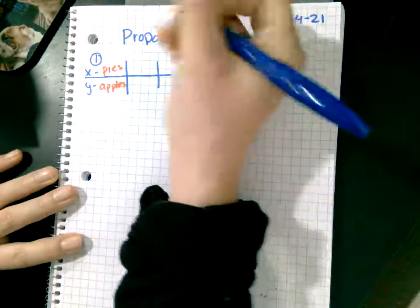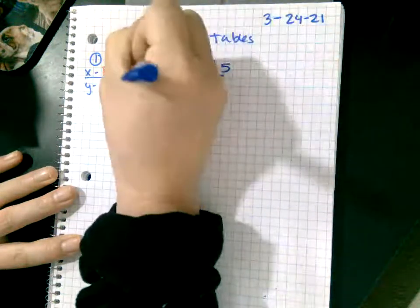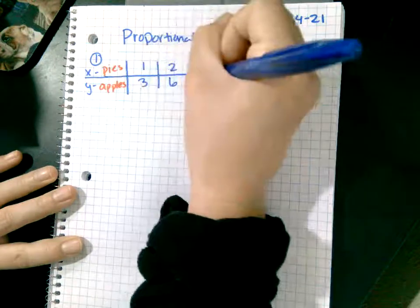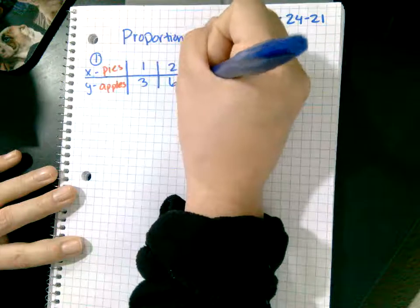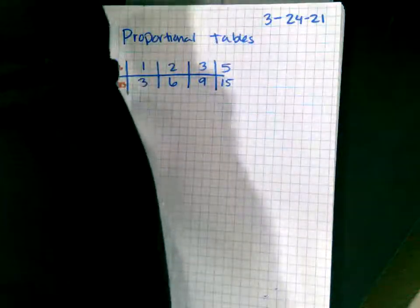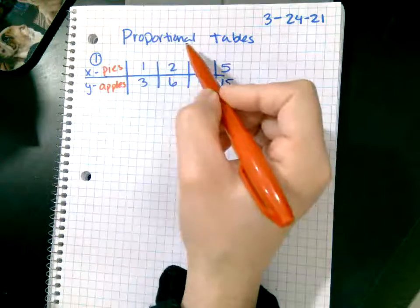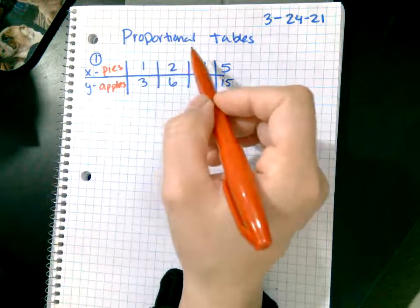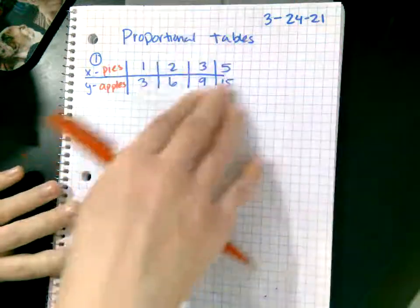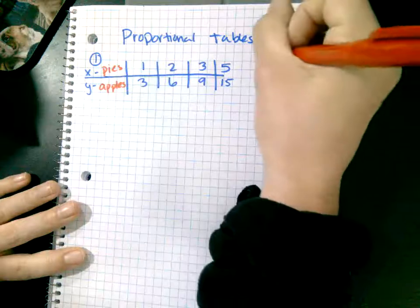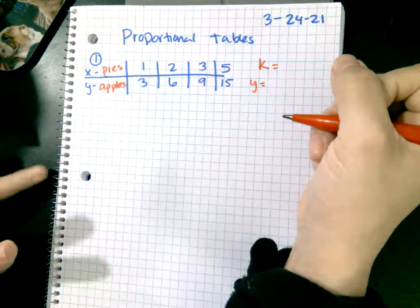One, two, three, five. Three, six, nine, fifteen. The following table is proportional. Given this, I want to know what is k equal to, what's your equation, and then we're going to graph.